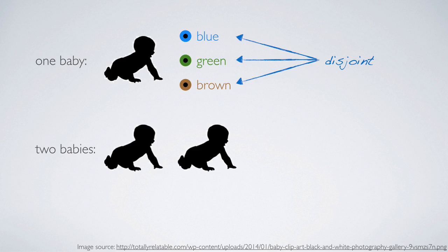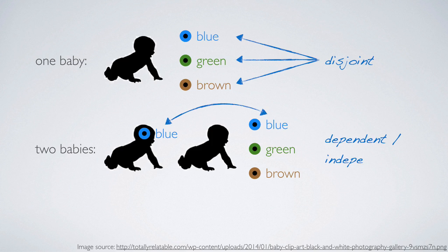Now suppose there are two babies. And suppose that we know that the first one has blue eyes. The possibilities for the second one are again, blue, green, and brown. These three outcomes for the second baby are also disjoint from each other. However, the eye color of the first and the second baby may be dependent or independent, depending on whether the babies are related or randomly drawn from the population.